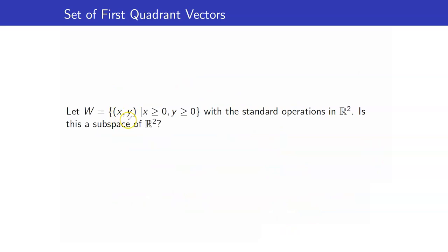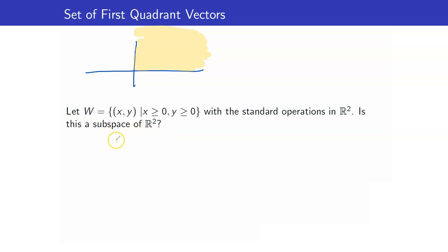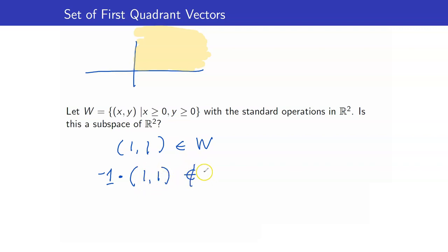Next, consider W as the set of all ordered pairs in the first quadrant, where x is greater than or equal to 0 and y is greater than or equal to 0. Is this a subspace of R2? The answer is no, because it fails closure under scalar multiplication. For example, the vector (1, 1) is in W, but multiplying by negative 1 gives (negative 1, negative 1), which is in the third quadrant and not in W.